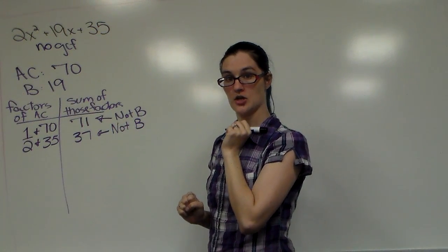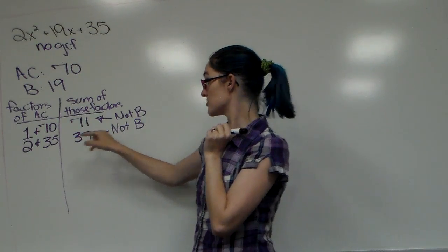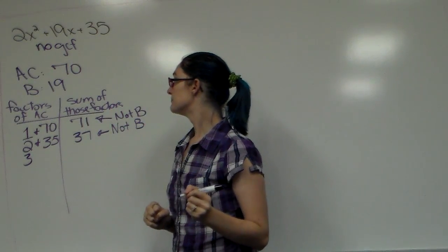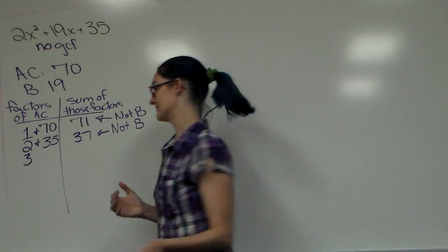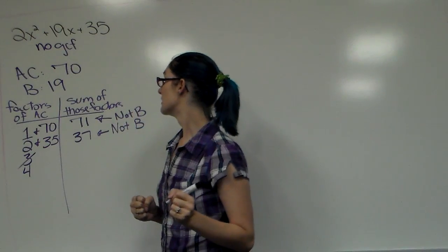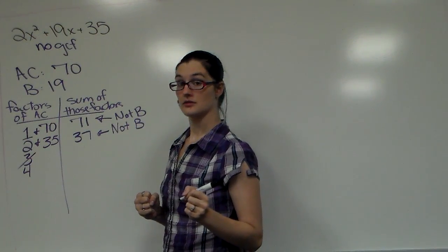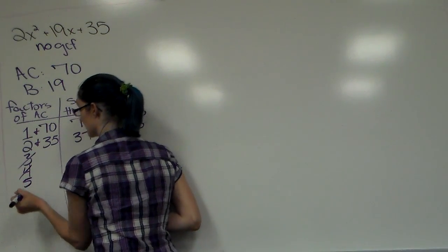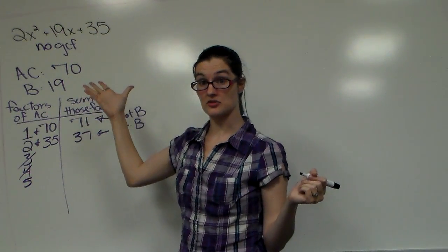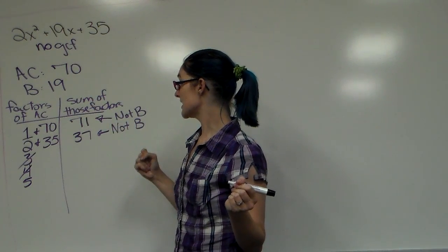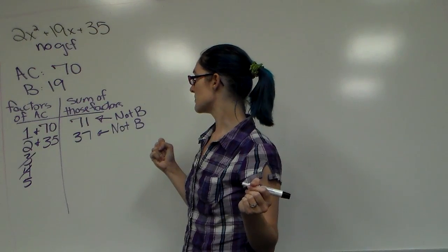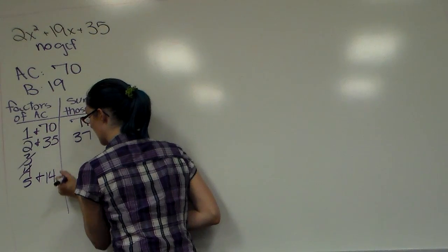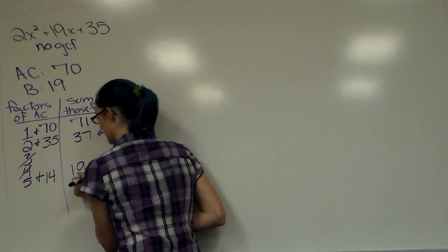Still not B. You're not done until you found B. 1 didn't work, 2 didn't work, try the number 3. 3 does not go into 70. What about the number 4? 4 does not go into 70. Number 5 ends in a zero so 5 should go into it. 70 divided by 5 is going to be 14. 5 plus 14, we add those together we get 19.